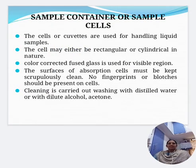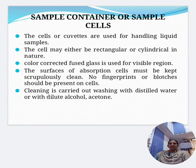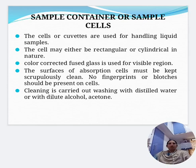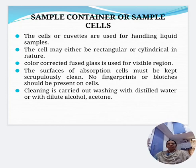The sample container or cuvette is used for handling liquid samples. Cells may be either rectangular or cylindrical. Color-corrected fused glass is used for the visible region. The surface of the absorption cells must be kept scrupulously clean — no fingerprints or blotches should be present, as these cause errors. Cleaning is carried out by washing with distilled water, dilute alcohol, or acetone.